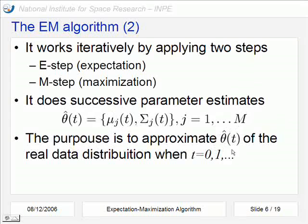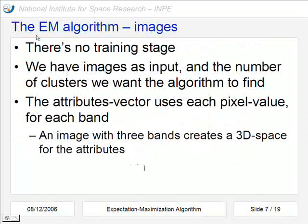The purpose is to approximate this value theta of the real data distribution according to the time changes. When we apply this algorithm to images, as I already said, this is an unsupervised classification method so we do not have a training stage. We have images as input and also the number of clusters we want the algorithm to find. The attributes vector is constructed by each pixel value for each band, so an image with three bands creates a three-dimensional space for the attributes.